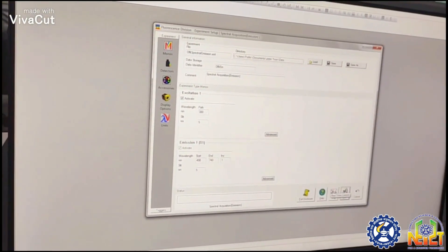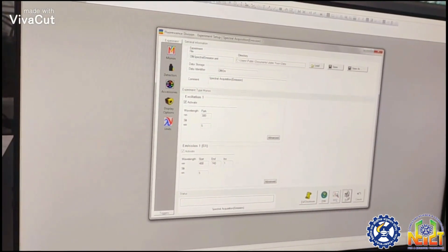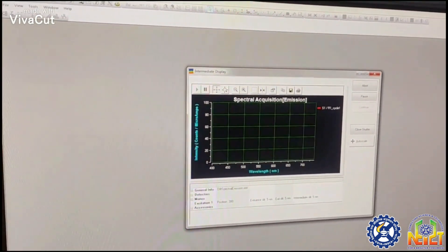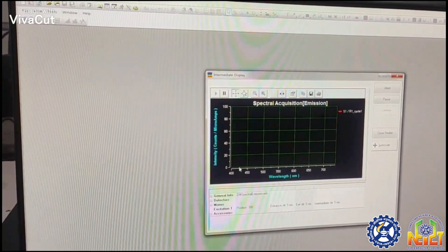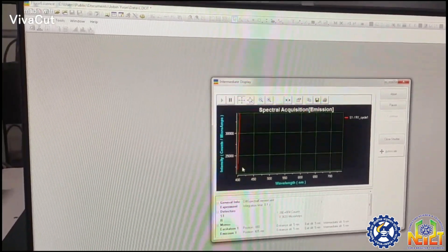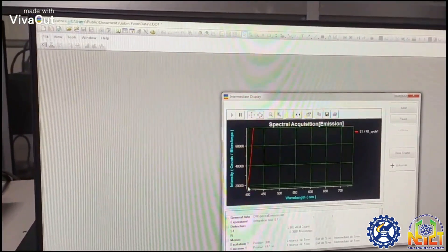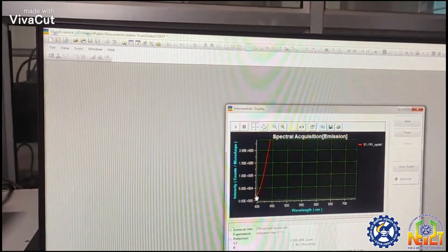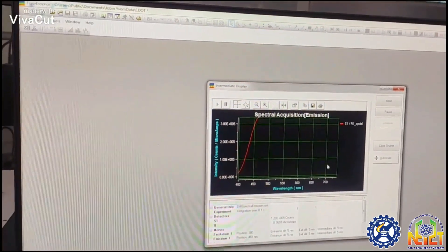Now we run the experiment and the spectrum is generated. Initialization is going on, and you can see the output spectrum being generated from 400 nanometers up to 740 nanometers.